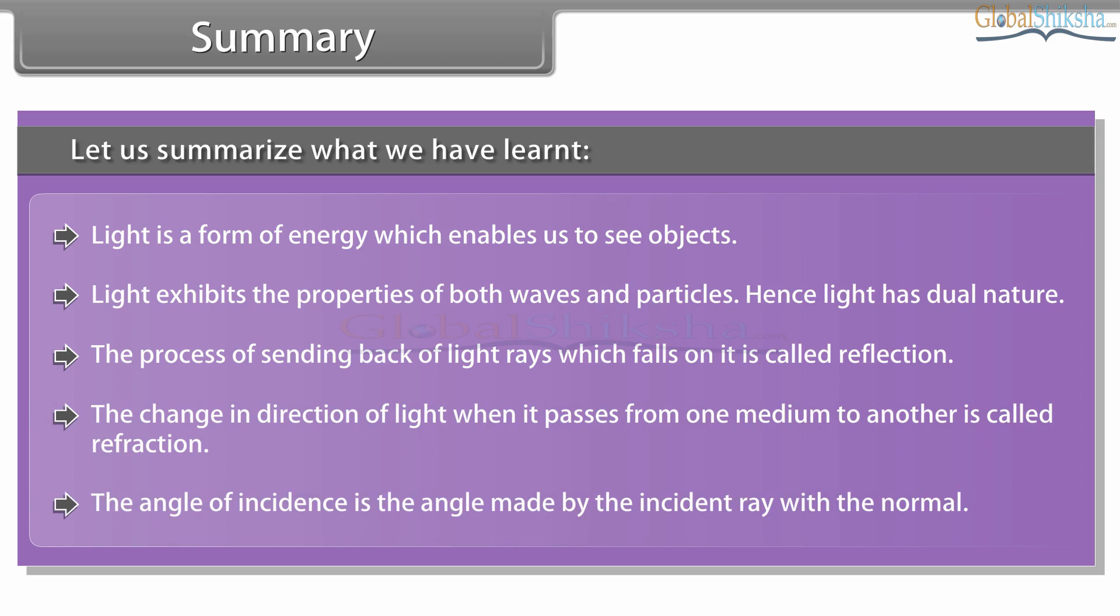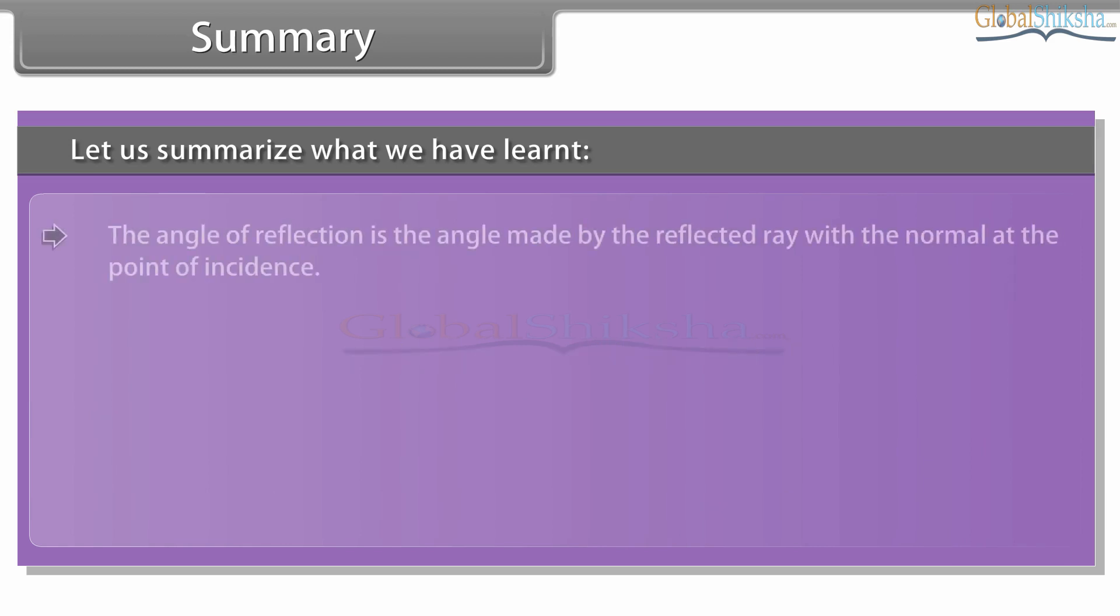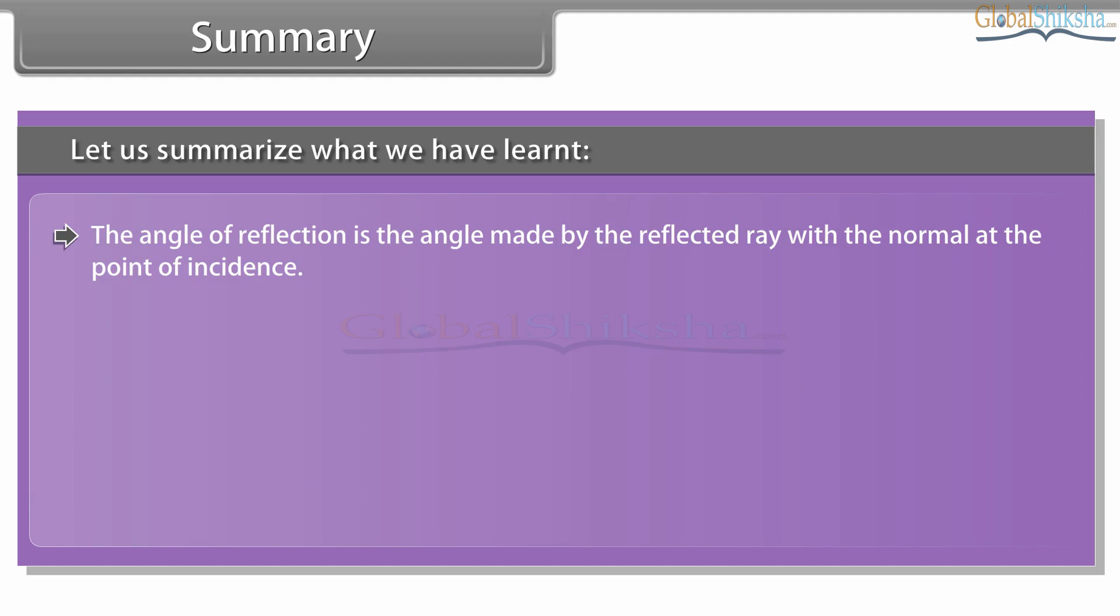The angle of incidence is the angle made by the incident ray with the normal. The angle of reflection is the angle made by the reflected ray with the normal at the point of incidence. The angle of incidence is equal to the angle of reflection.